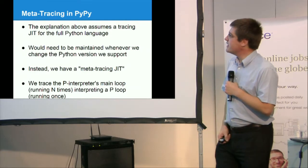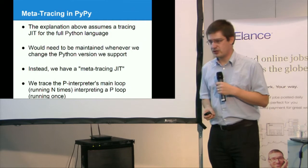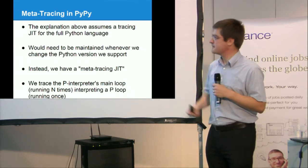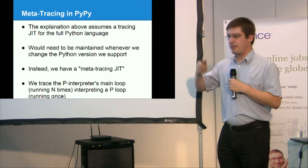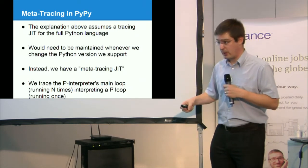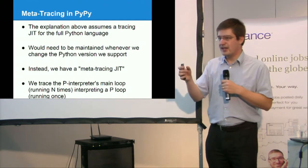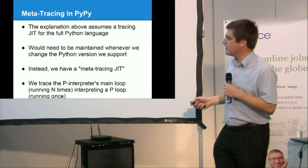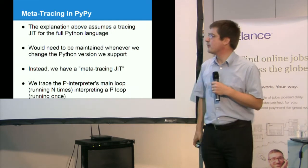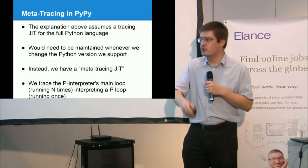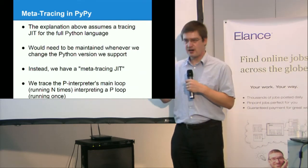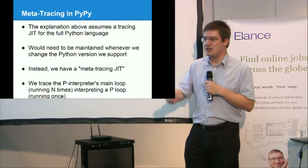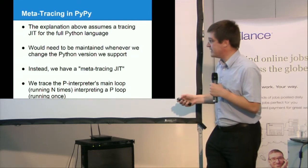The explanation above, what I just said, is that we have a tracing just-in-time for the full Python language. That is, we are able to follow the execution of your program and emit machine code for it. This is quite difficult to get right. And anyway, it will need to be maintained each time you change the Python version. So instead of maintaining a mapping between bytecodes to some machine code, we have a meta-tracing just-in-time.